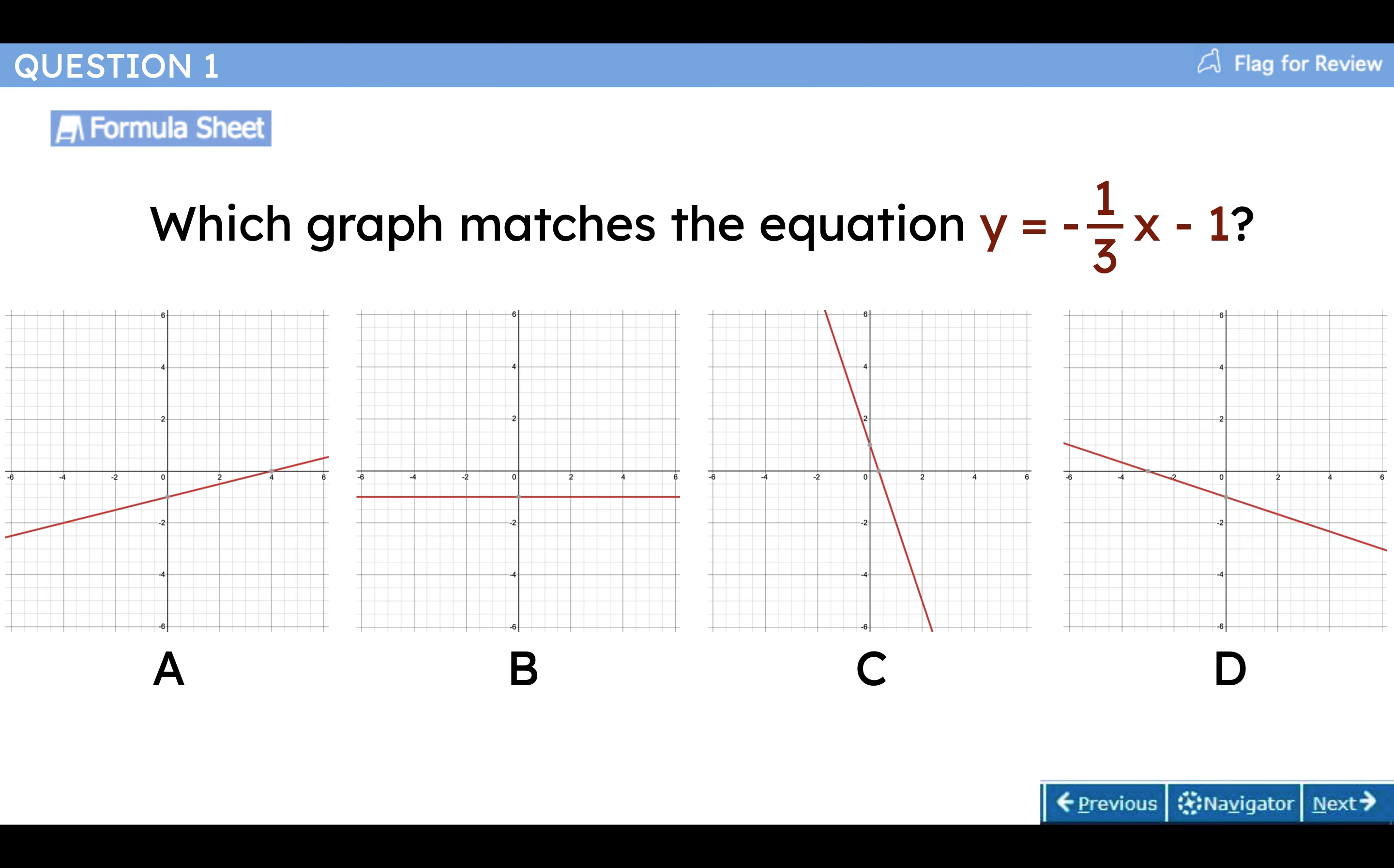Let's look at the question. Which graph matches the equation y equals negative one-third x minus one? Okay, so it's saying it in equation form here, and one of these four is the same thing, the right translation in graphic form. Well, I don't speak both languages, so let's get deep into it and see if we can find any tricks to solving this.